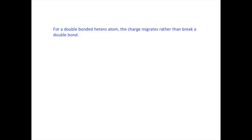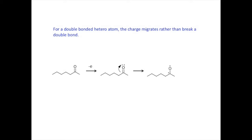What happens when the charge site is connected to a double bond? The charge site migrates rather than breaking the double bond. Let's look at a ketone. Ionization occurs at the oxygen atom and the charge on the atom withdraws a pair of electrons from the double bond, moving the charge to the carbon atom. The carbon atom pulls both electrons out of a neighboring bond. That process breaks the bond and moves the charge to the alkyl fragment. The fragment with the oxygen atom may look a little strange here, but we may expect that the double bond will reform into a more realistic structure.